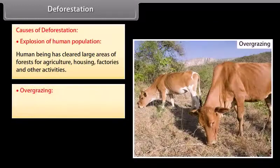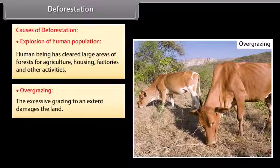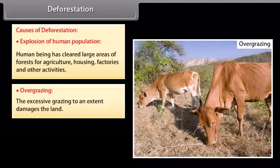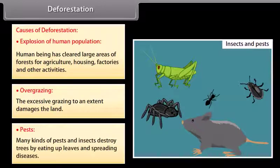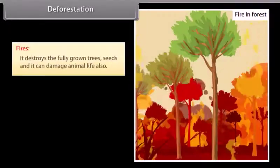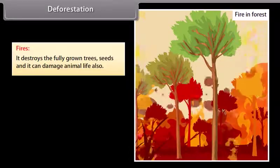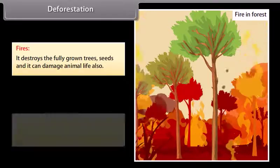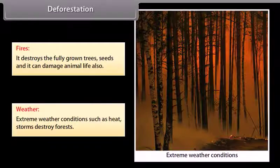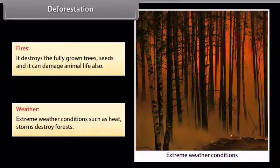Overgrazing: excessive grazing damages the land. Pests: many kinds of pests and insects destroy trees by eating up leaves and spreading diseases. Fires destroy fully grown trees, seeds, and can damage animal life also. Weather: extreme weather conditions such as heat and storms destroy forests.